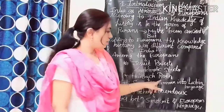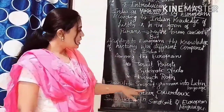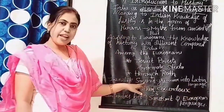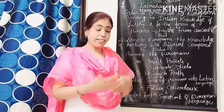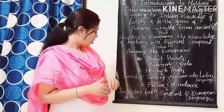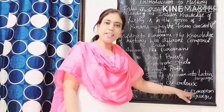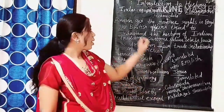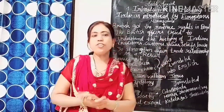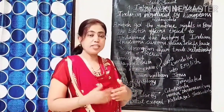A Jesuit priest translated Sanskrit grammar into Latin language. Sanskrit is our ancient language. A century later, Father Coeurdoux identified so many similarities between Sanskrit and European languages. Meanwhile, the British got revenue rights in Bengal — revenue rights meaning the collection of tax in Bengal — and so many British officers came to India.